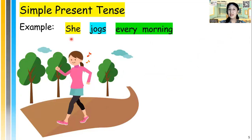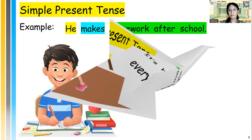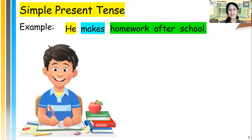Next one: she jogs every morning. It's her daily activity every morning. Next, he makes homework after school. It's his habit.